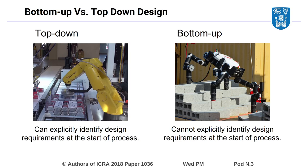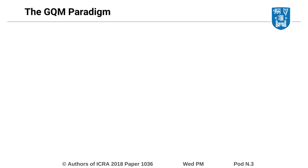Our research explores how the Goals-Question-Metrics method, or simply GQM, can be adopted for use in design applications involving robots.